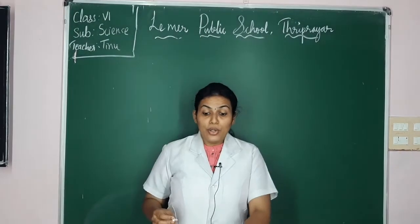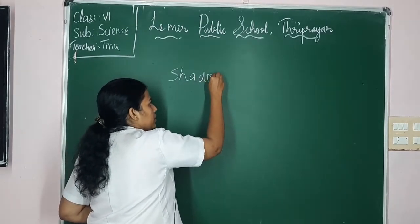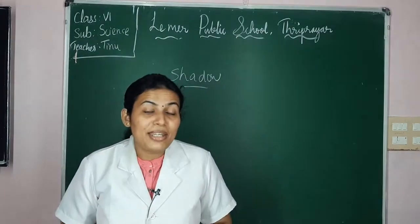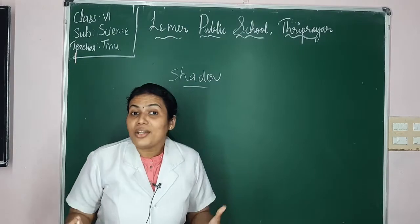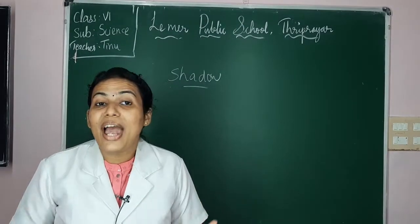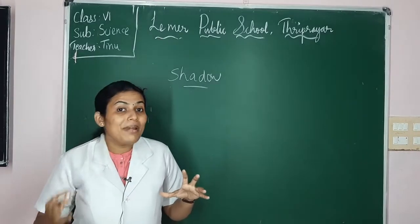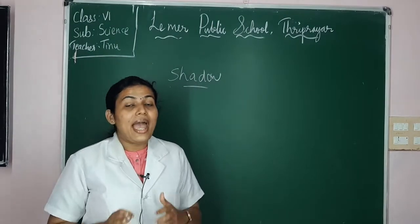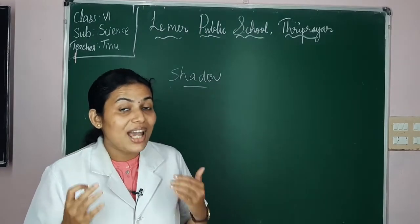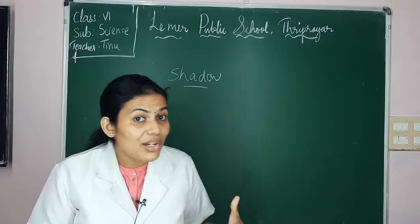Today's class we are going to learn about shadows. I'm sure all of you have seen shadows. What is the color of a shadow? A shadow has a dark or black color. A shadow can be defined as a dark patch or shade formed behind an opaque object when it blocks the path of light.